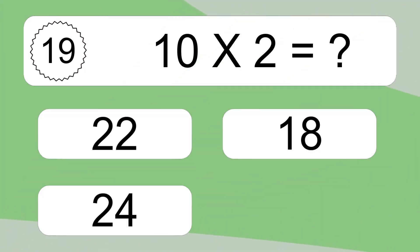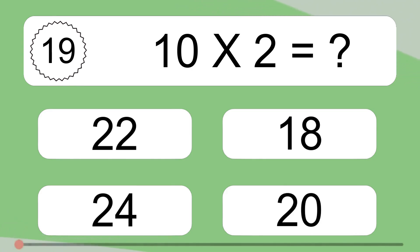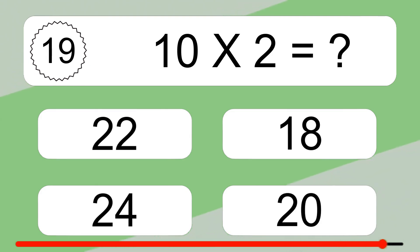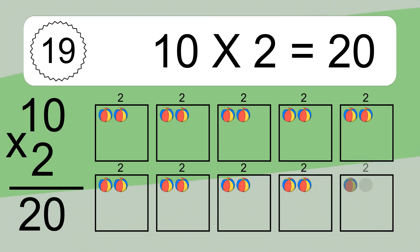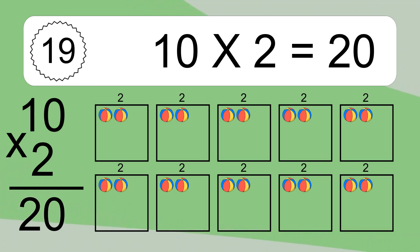10 times 2 equals what? 10 times 2 equals 20. We have 10 boxes and each box has two colorful balls inside. If you count all the balls in all the boxes together, you will have 10 times two balls. This equals 20 balls.